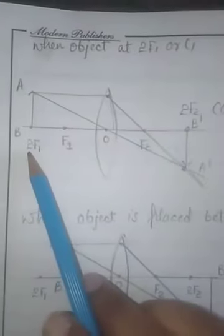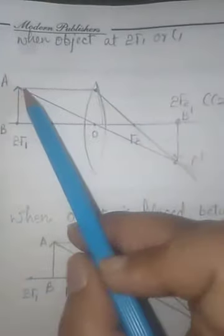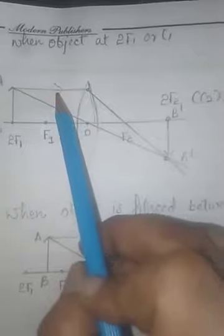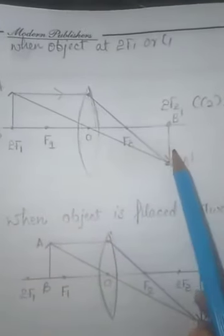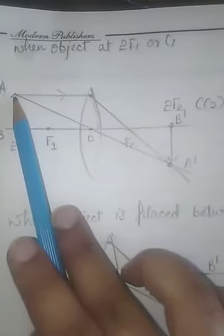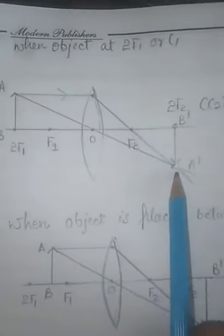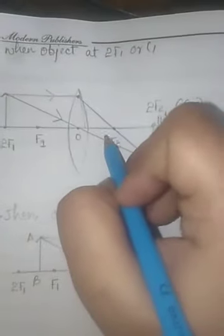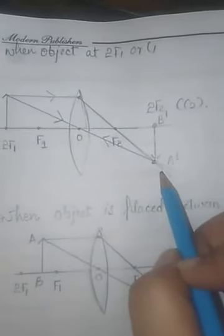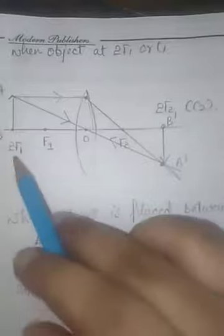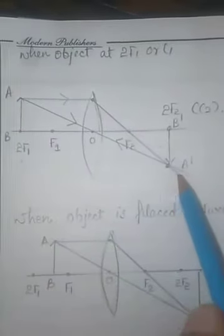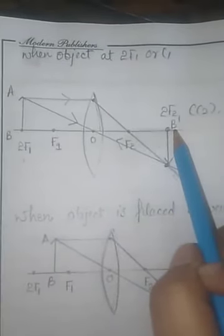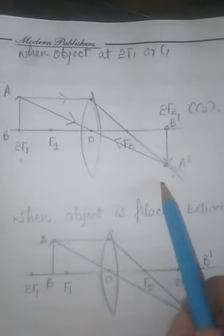The third diagram of the convex lens is when the object is placed at 2f1. According to rule one, an incident ray passes through the focus. According to rule three, a ray passes through the optical center and continues on the same path. The rays meet at 2f2, so the image is formed at 2f2. The image is real and inverted.